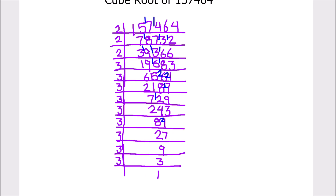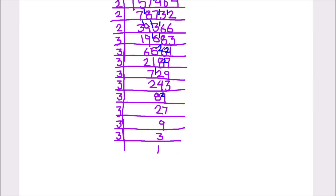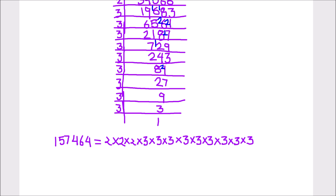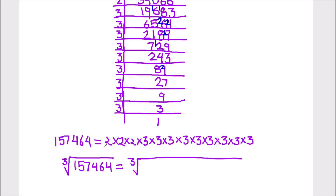Our number is fully divided. Let us write this number in terms of its factors. Now we have written all the factors of 1,57,464. To find the cube root, we are going to take the cube root on both sides. We will take 3 numbers together, so this is going to be 2 cubed, then 3 cubed, 3 cubed and 3 cubed.